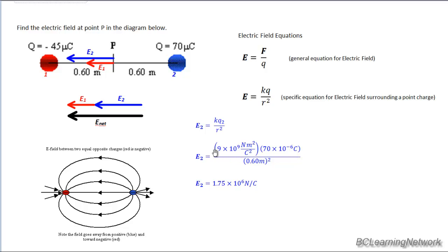And as always, K coulombs constant is 9 times 10 to the 9. And you work all that through, and you get E2 is 1.75 times 10 to the 6 newtons per coulomb.